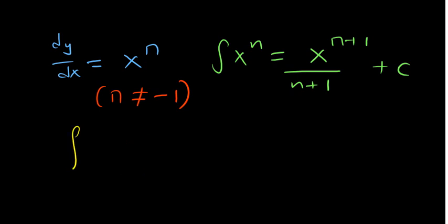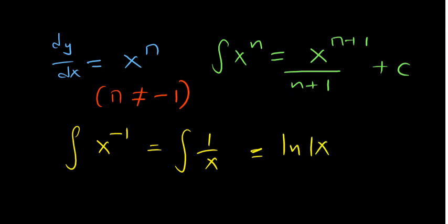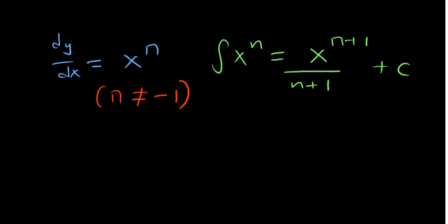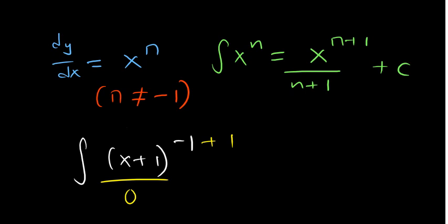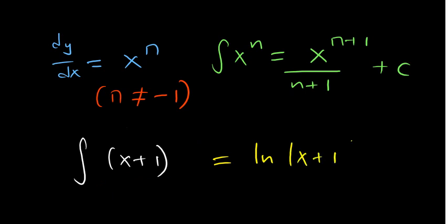When n = -1, the integral of x to the power -1 — which is the integral of 1/x — gives the natural log of x. This applies to similar cases too: for example, the integral of (x + 1) to the power -1 also cannot use the power rule, so it becomes the natural log of the absolute value of (x + 1).